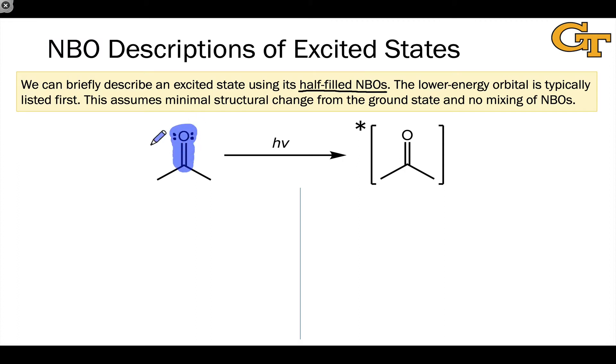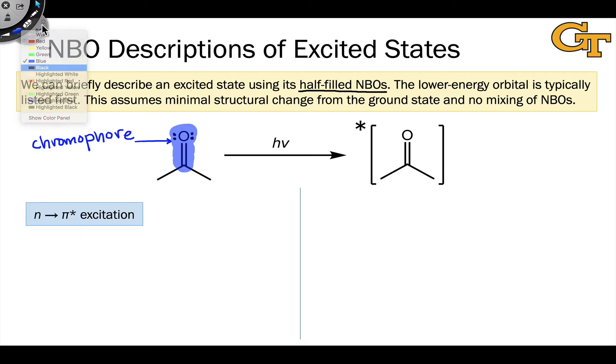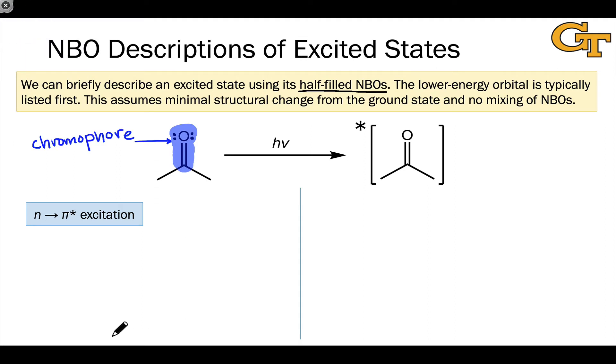This is the part of the molecule where the electrons are really being perturbed when the light is absorbed. This group that engages with the light has a special name—it's called a chromophore. I'm going to use that term throughout this course to describe a functional group that engages with light.